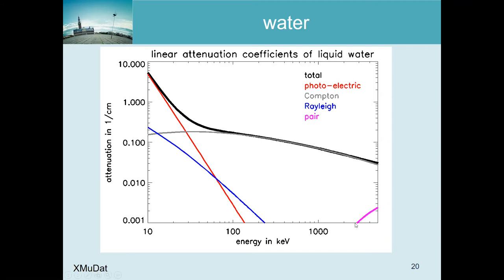Pair production also appears on the graph, but it only starts when there is enough energy to create two particles each with 511 keV of rest mass.